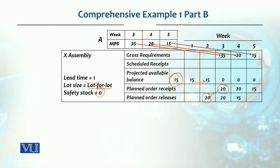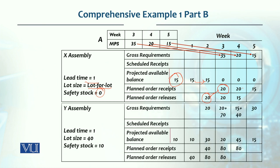Again, the requirement in the fourth week is 20 units, so we placed a 20-unit order in the third week to receive it in the fourth week. Those 20 units are consumed in the fourth week, ending inventory remains zero. Similarly, for the 15-unit requirement in the fifth week, we place the order and ending inventory remains zero.